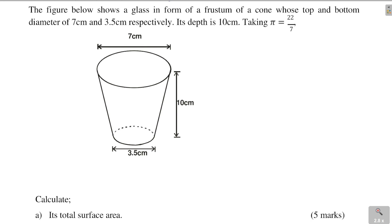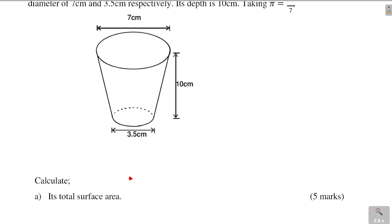Let's go to the first part — calculating the total surface area. You're given the top and the bottom diameter. This is a frustum in the form of a cone. The top and bottom diameters are given and the height is given. The first thing is to complete this cone before it was cut, since the frustum was obtained from a cone. Let's sketch how the full cone was before this frustum was obtained.